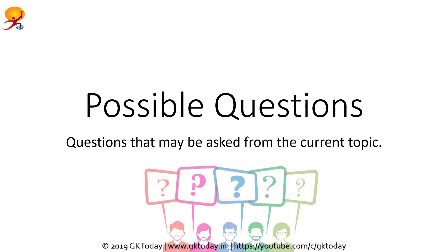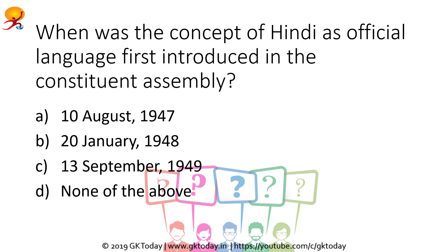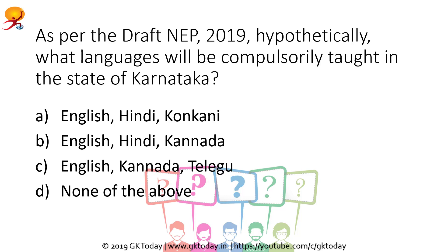Now let us move on to some possible questions. When was the concept of Hindi as official language first introduced in the Constituent Assembly? We know the Constituent Assembly was debating in the year 1949, so we can choose option C — 13 September 1949 — which is the correct answer.